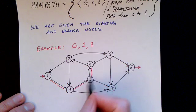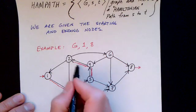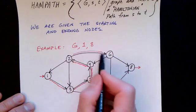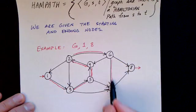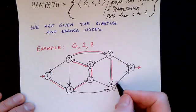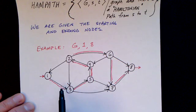And then from five, we'll go to four. And then from four, we'll go over to two and then back over to six. And then from six, we'll go down to seven. And finally, we'll go to eight. So this is a Hamiltonian path.